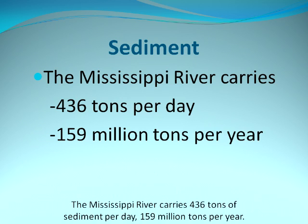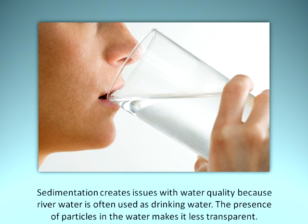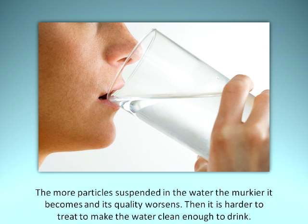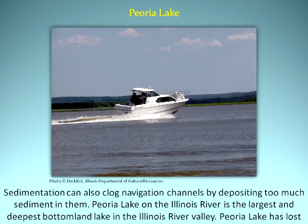The Mississippi River carries 436 tons of sediment a day — 159 million tons a year. Sedimentation creates issues with water quality because river water is often used as drinking water. The presence of particles makes the water less transparent; the more particles suspended in the water, the murkier it becomes, worsening quality and making it harder to treat and make clean enough to drink. Sedimentation can also clog navigation channels by depositing too much sediment in them.